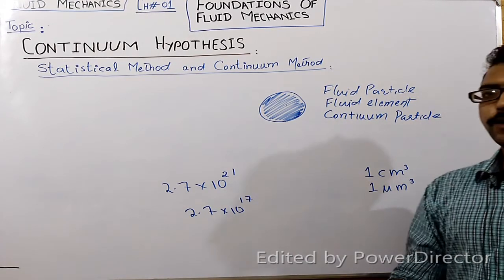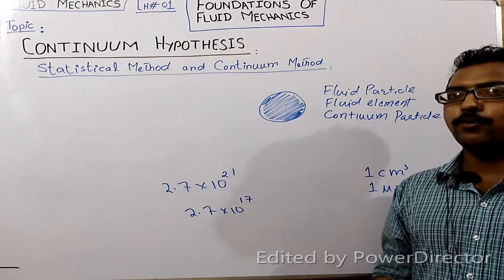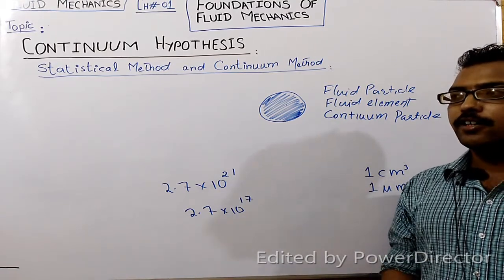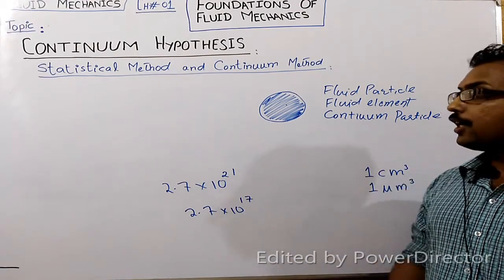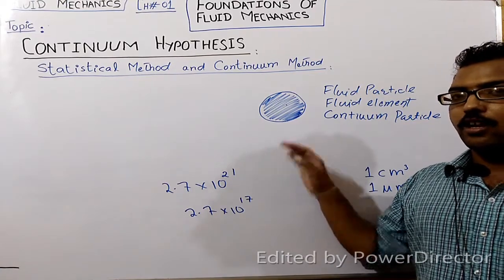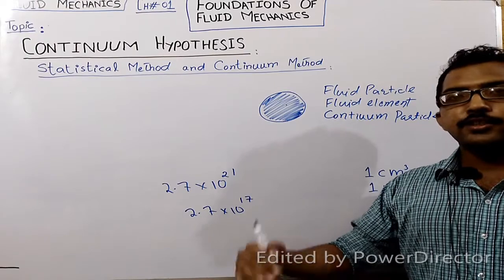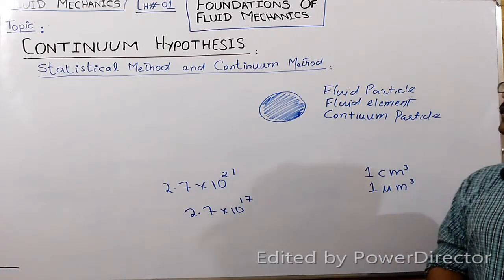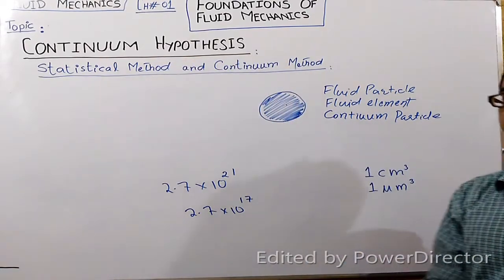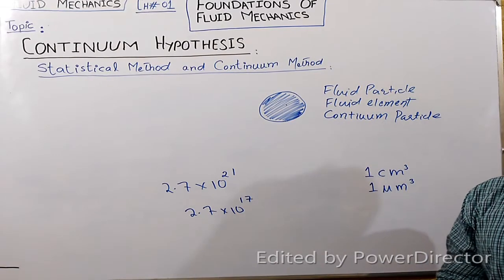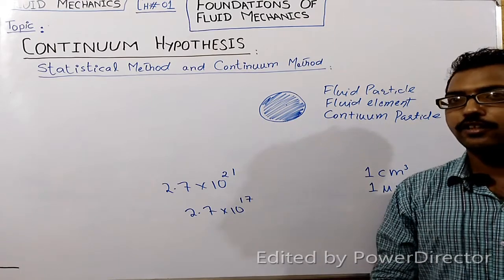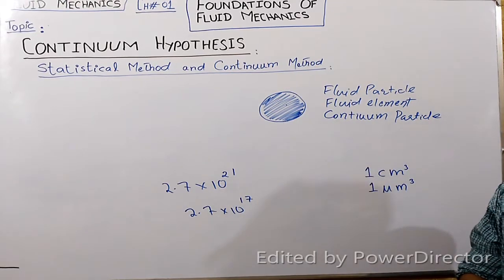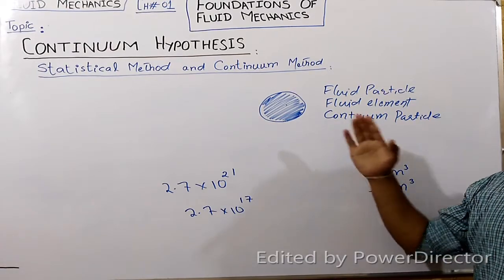In fluid mechanics we can think of a fluid as composed of fluid particles. Therefore, the fluid is not a discrete distribution of matter — it is a continuous distribution. We can assume that matter is continuously distributed throughout the region of study, and this hypothesis is called the continuum hypothesis. To derive equations governing fluid motion, we apply the laws of dynamics to the fluid particles.